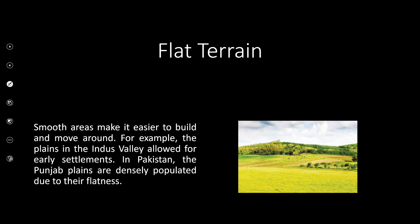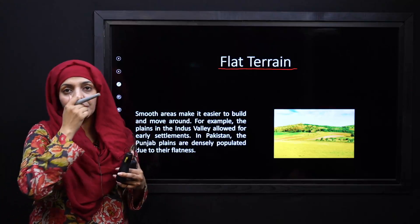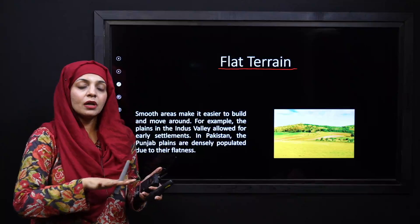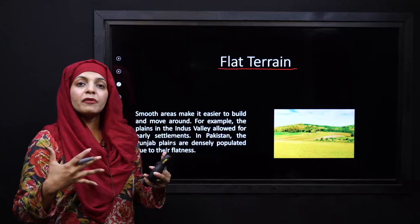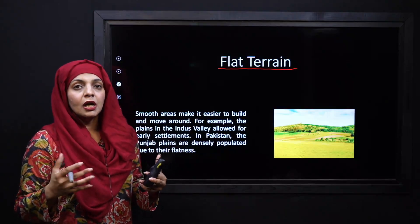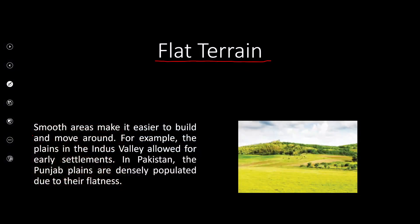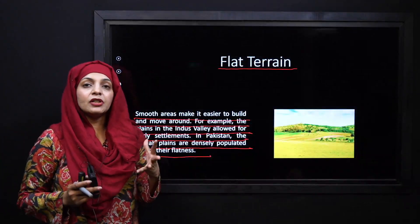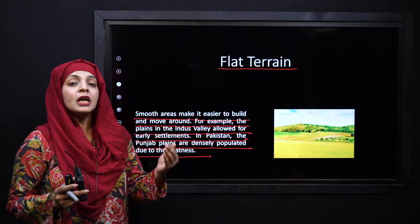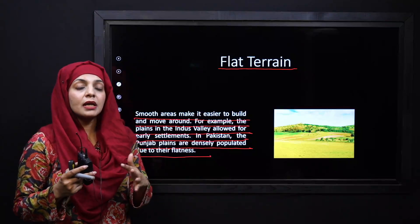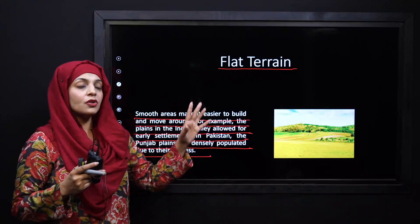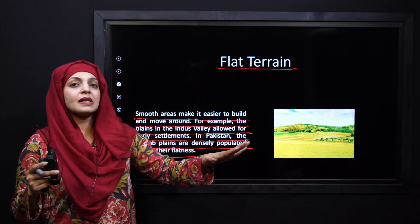People never simply choose to go to the mountains because it is very difficult to build a house and live there. Even those who live in mountainous regions come down to the valleys where the terrain is quite flat, and then they start their agricultural and residential activities. Smooth, flat areas make it easier to build and move around. For example, the plains of the Indus Valley allowed for early settlements. In Pakistan, the Punjab plains are densely populated due to their flatness.